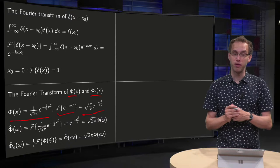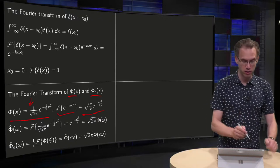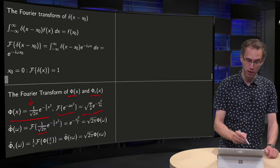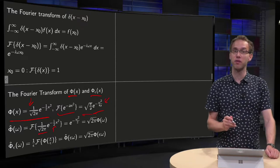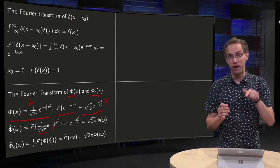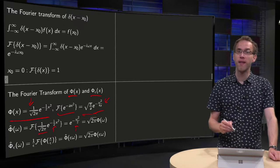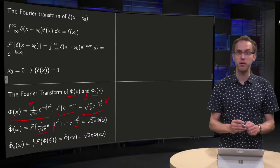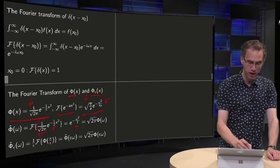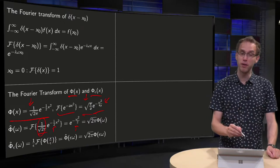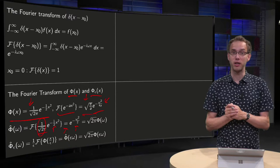What will be the Fourier transform of this particular Gaussian? We have a pre-factor of one over square root of two pi, and a equals one half. Plugging in a equals one half: in the exponent we get omega squared divided by 4a, and 4 times one half equals 2, so we get e to the power of minus omega squared over 2. The pre-factor becomes square root of pi over one half, which is square root of two pi, but we divide by square root of two pi, so those cancel out and the pre-factor becomes one.